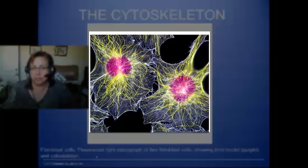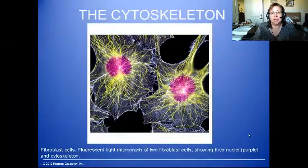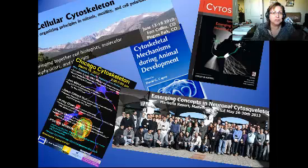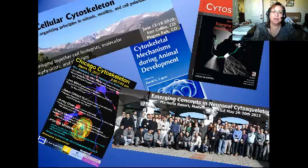We're going to see that they're going to be used in movement, support, and communication. What you see here are two fibroblast cells — cells that help to make connective tissues. The area of research surrounding the cytoskeleton is pretty hot these days, with lots of conferences focused on what are called molecular motors or motor proteins, which we'll talk about as part of this screencast.